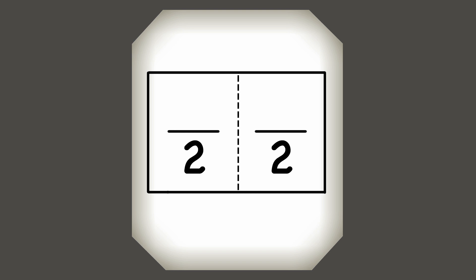Ask your students to take out their art journals. Point to one page of their journal and ask how much of the paper is this. Draw a picture of the paper on the overhead, dividing it into halves. Tell your students: here are two sections. Write the number two in the denominator of each section. The denominator tells us how many equal parts the fraction has. Now point to one of the sections. Ask your class how much of the paper is this piece. Label the drawing — the top part of the fraction is called the numerator. The numerator shows how many parts of the whole we are working with in the fraction.